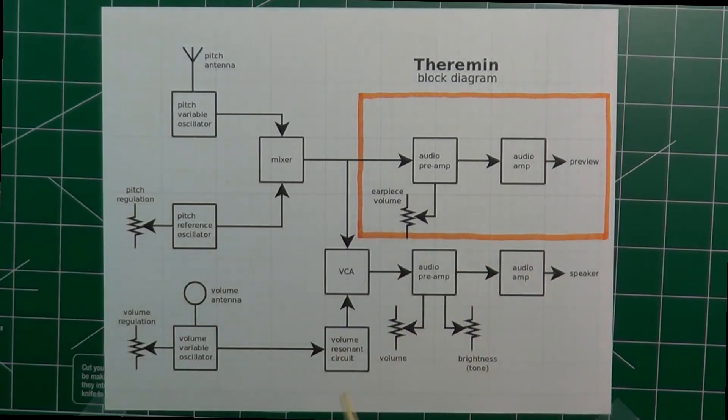To make the preview channel, we just need to take the signal coming from the mixer and input it to a second preamp, which is provided with its own volume control. The preamp output goes to another power amp, less powerful than the first one, since this is only needed to pilot an earpiece or headset.